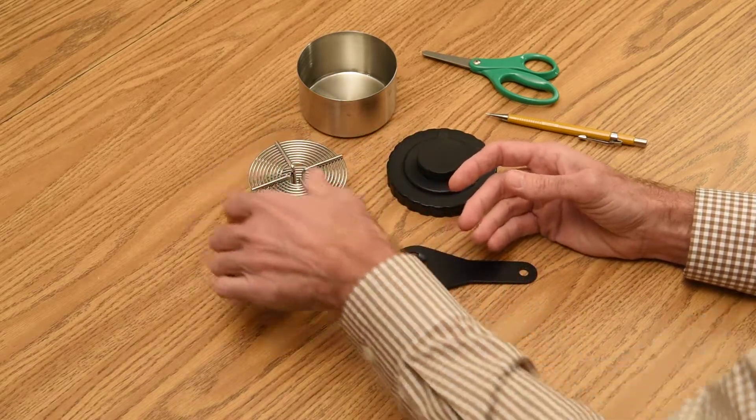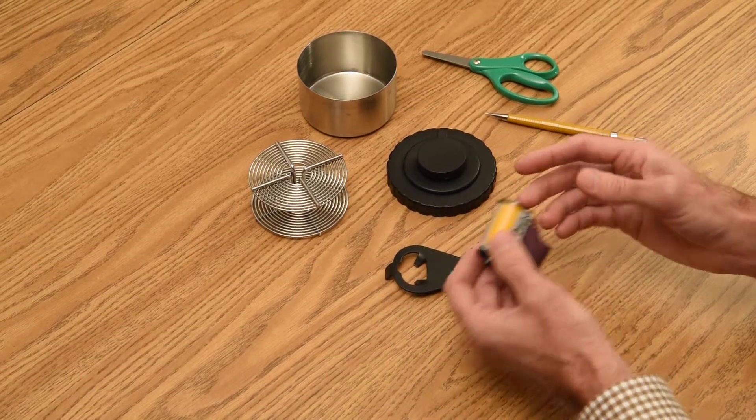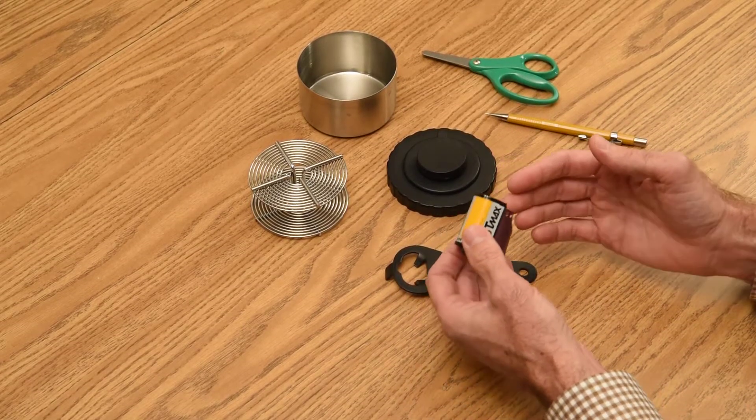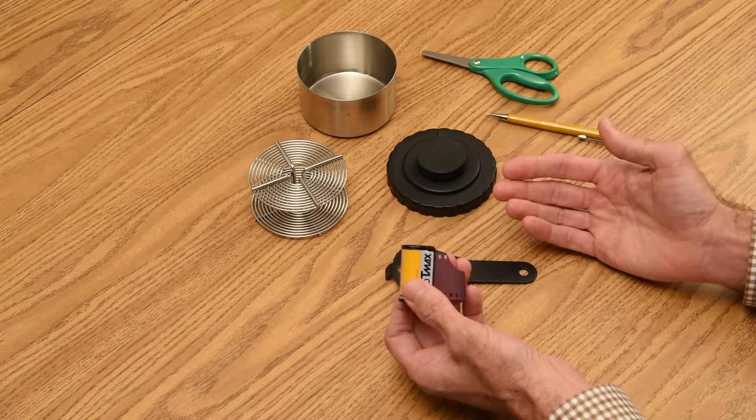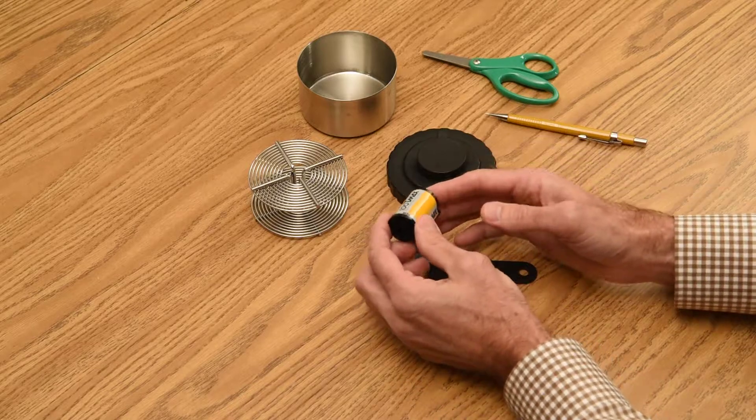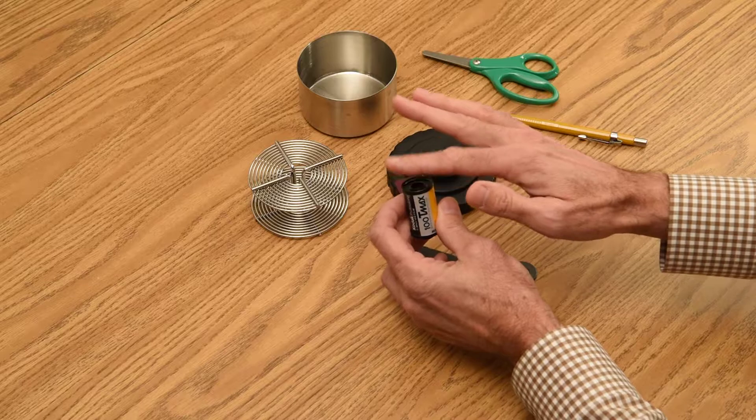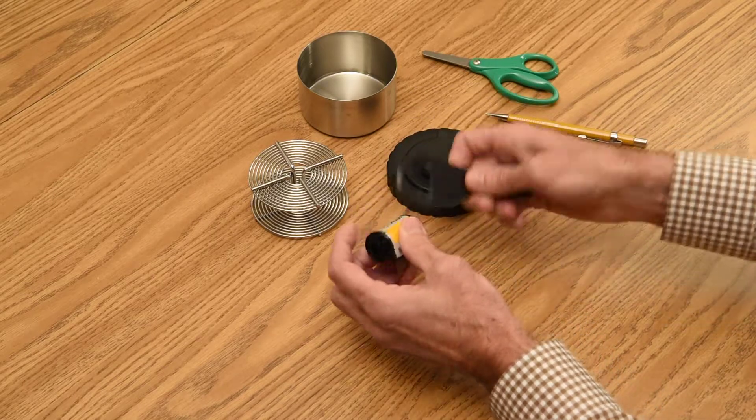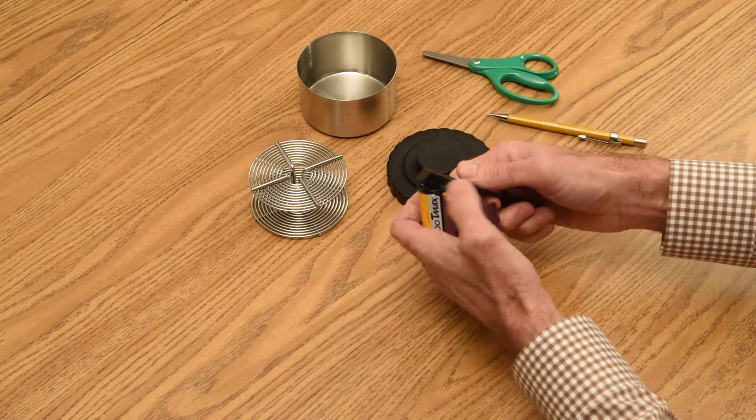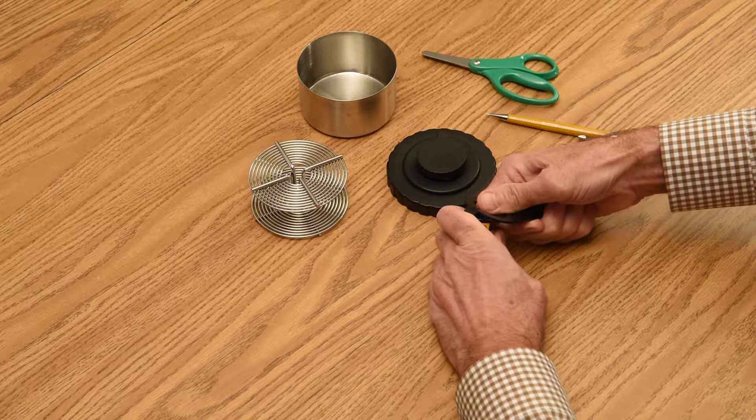First we need to open our film. Keep in mind that everything I'm doing in this demonstration, you will do in absolute darkness, either in a completely dark room with no safe light, or using a changing bag. To pry open the film cassette, you want to take the lid off on the flat side, not on the side with the spool sticking through. I'm going to use a can opener with two little prongs on it.